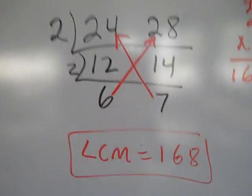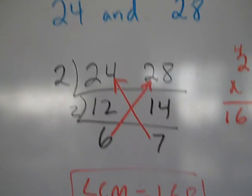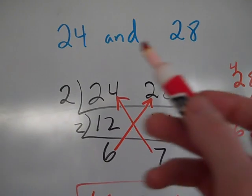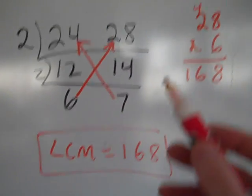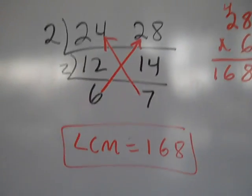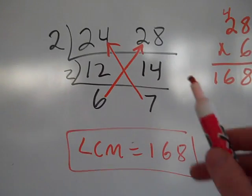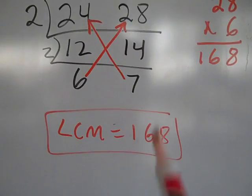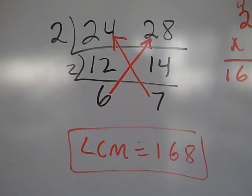That's the least common multiple of 24 and 28. You can imagine listing multiples of these numbers, how hard that would be. This is a real easy, fast way to find the answer. And if you want to check, if you're curious if you're right, try 24 times 7 and see if you get the same number. You should if you did it right.